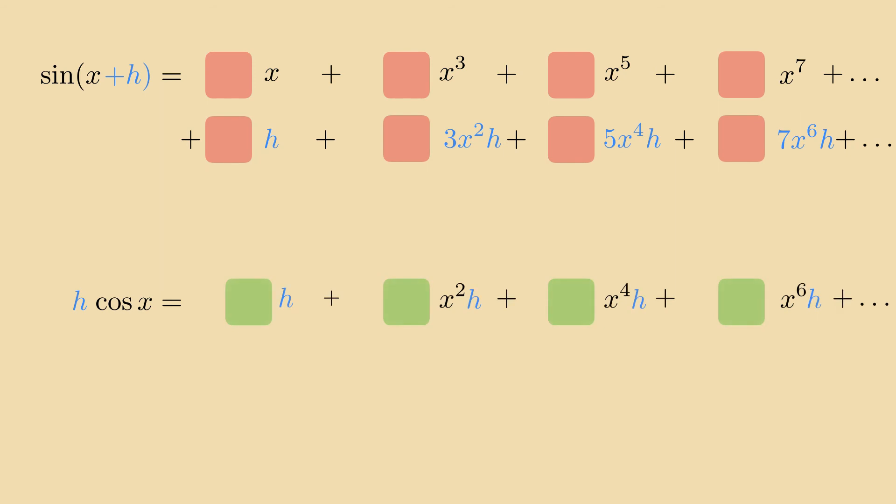Comparing the coefficients, we see that they differ by the constant factors 1, 3, 5, 7, and so on. The power series of the cosine is in this manner determined by the series for the sine. That looks promising.